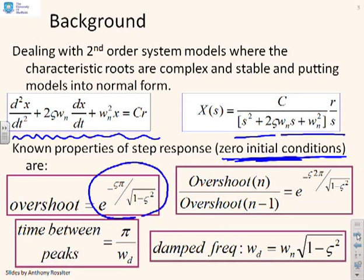We know the formula for the overshoot: e to the minus ζπ over root 1 minus ζ². We know the ratio of one overshoot to the next overshoot is e to the minus 2ζπ over root 1 minus ζ². We know what the time between peaks is, it's π over ωd, where ωd is ωₙ times the root 1 minus ζ². So these are the formulas that we are going to use.